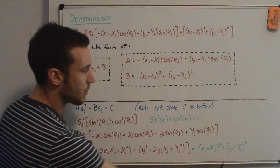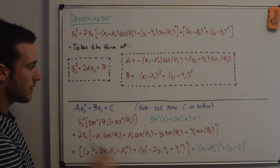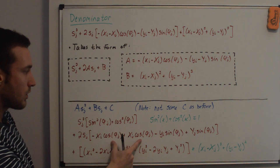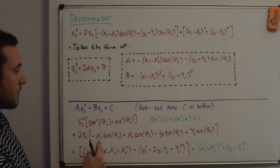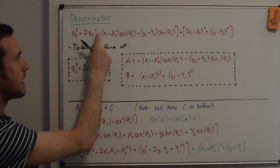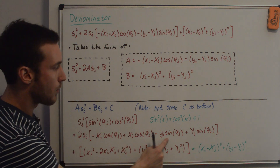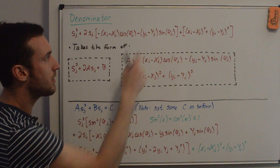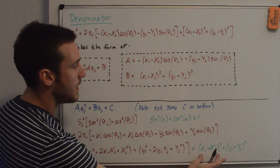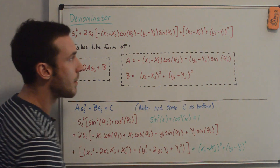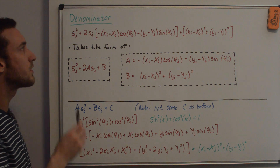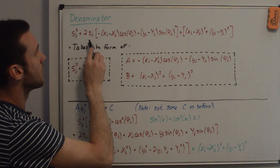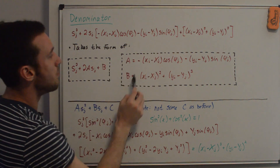Two simplifications apply. First, sin²(x) + cos²(x) = 1, so the s_j² coefficient reduces to simply s_j². Second, the constant C terms are just expansions of (x_i - X_j)² and (y_i - Y_j)². The full denominator becomes s_j² + 2s_j[-(x_i - X_j)cos(phi_j) - (y_i - Y_j)sin(phi_j)] + (x_i - X_j)² + (y_i - Y_j)², which takes the quadratic form s_j² + 2A·s_j + B.